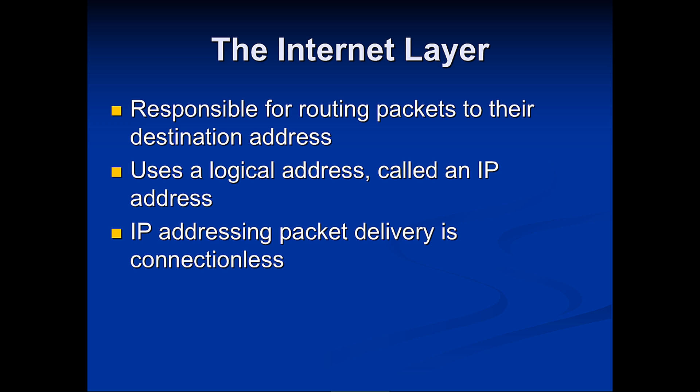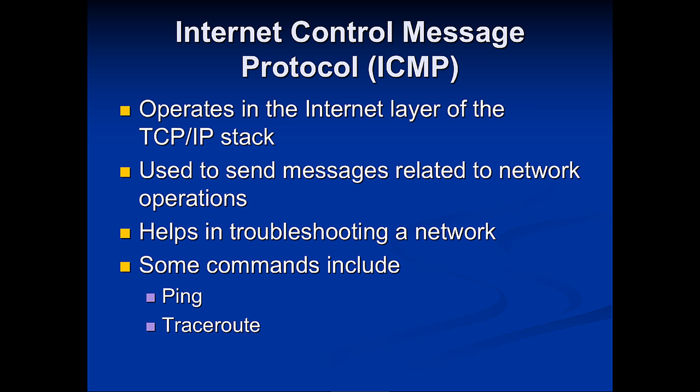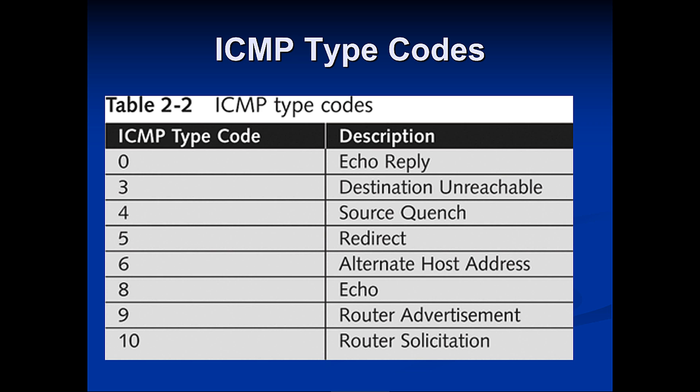The Internet layer is responsible for routing. It uses logical addressing called IP addressing and is connectionless — best effort. Protocols that use it include ICMP, also known as ping, which is used for basic network troubleshooting. ICMP types include: Type 0 — echo reply, Type 3 — destination unreachable, Type 4 — source quench, Type 5 — redirect, Type 6 — alternate host address, Type 8 — echo, Type 9 — router advertisement, Type 10 — router solicitation.